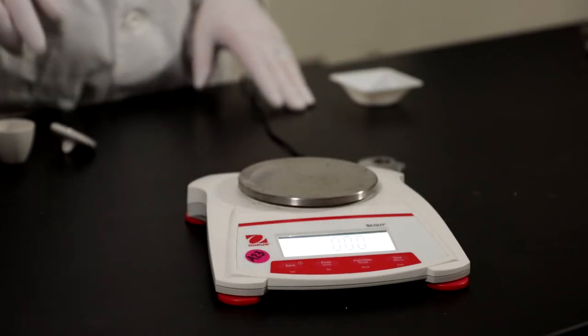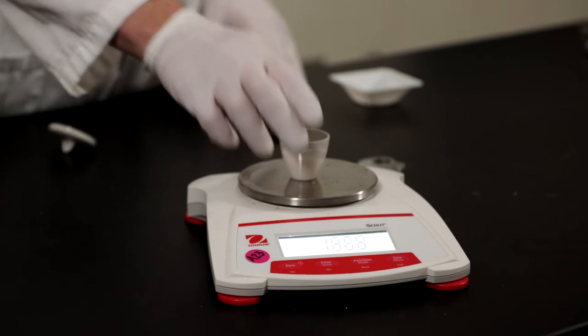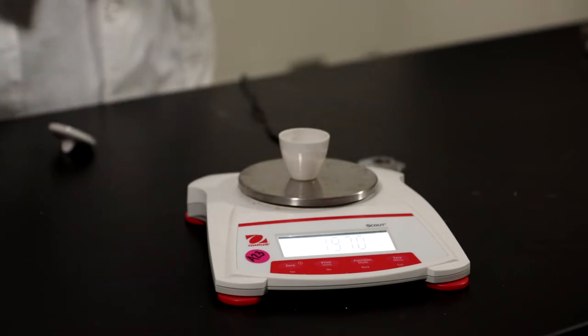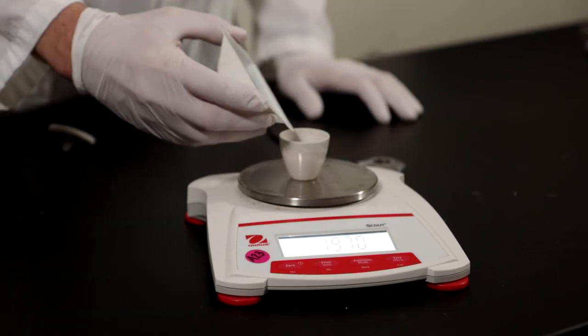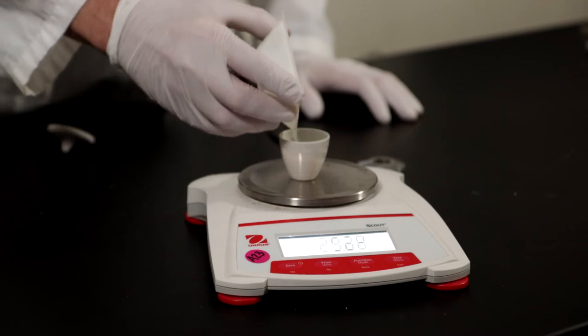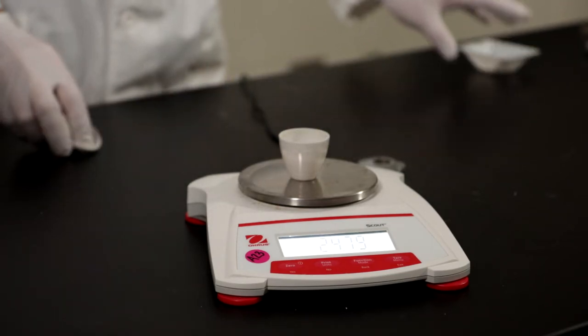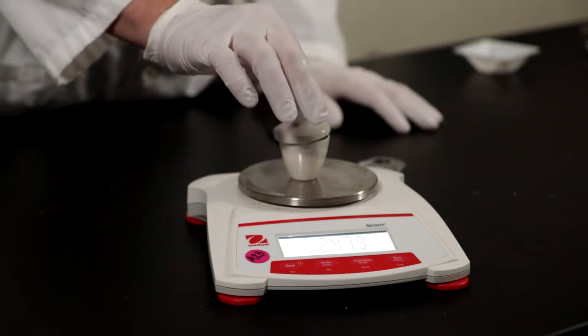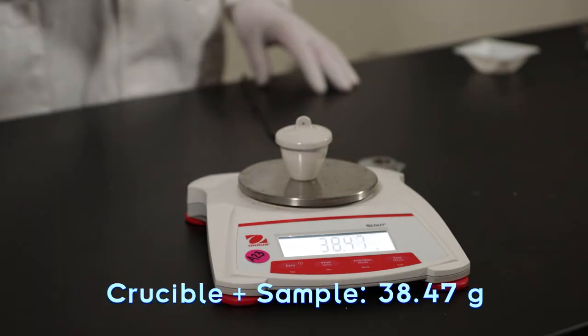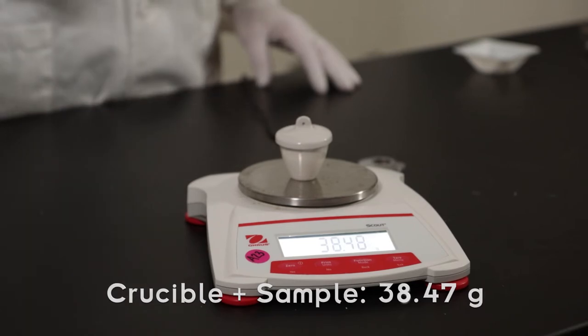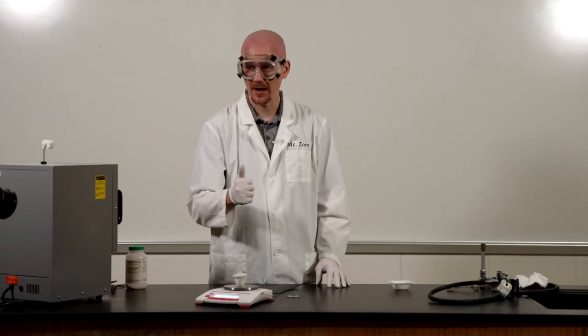Go ahead and zero out my balance again, and then I'm going to place my crucible on the balance. Add my sodium bicarbonate and I'm going to include the lid here. So this is my crucible with my sample and the lid. So I'm going to go ahead and record that mass and now it's time to fire up the Bunsen burner.